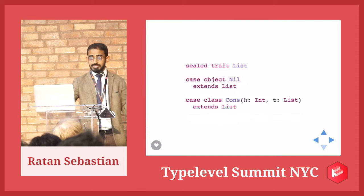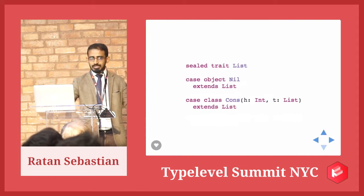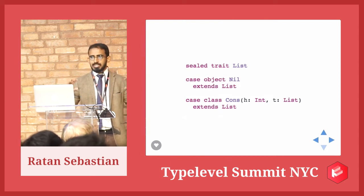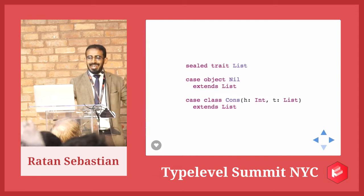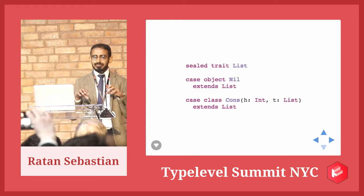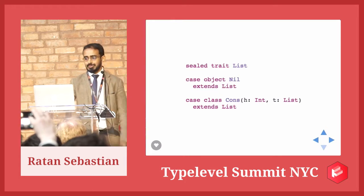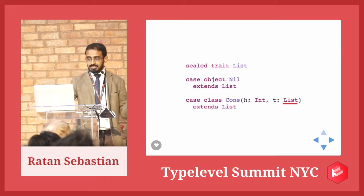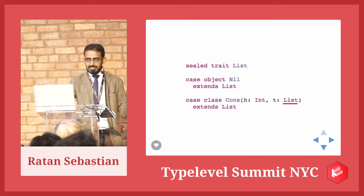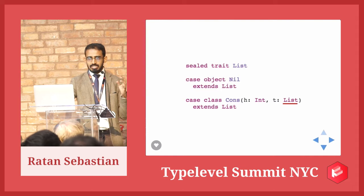Another example of direct recursion is the definition of the list data type itself. In the course of this talk, I'm going to omit the type parameter of list — just assume that all data structures are data structures of int. That axis of parameterism of data structures is not going to be relevant here. The definition of the cons constructor for this linked list is recursive — it refers to the structure that it's defining. We'll come back to this later, but for now let's just stick to recursion in function definitions.